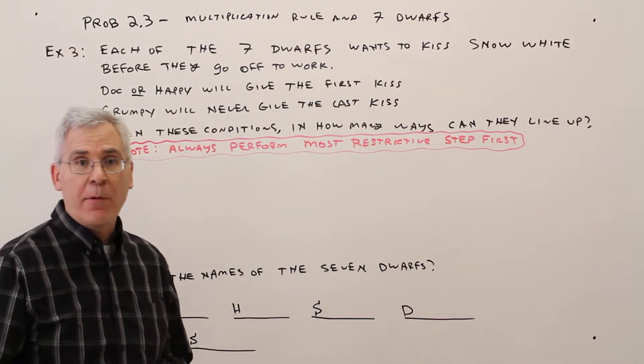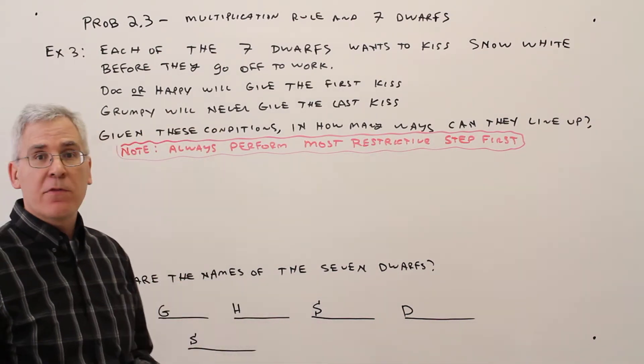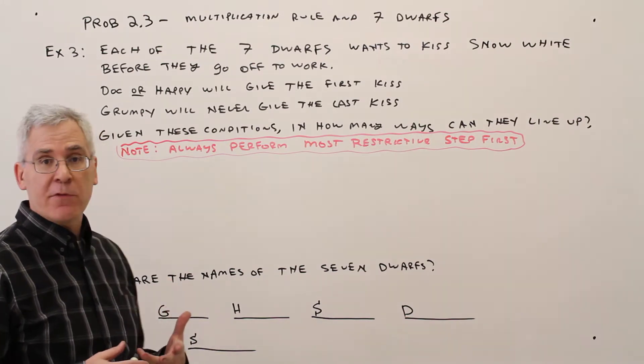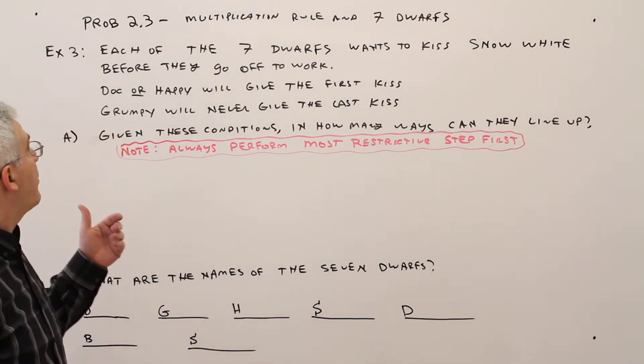Welcome to the video of Probability 2.3, the Multiplication Rule, and the Seven Dwarfs. This is Example 3.